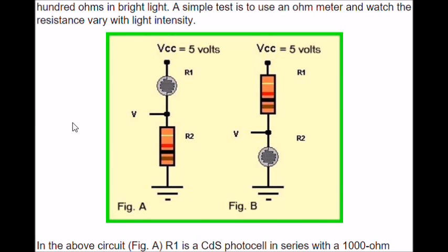Typically, they are connected in a voltage divider circuit. If you look at the circuit in figure A, as the resistance drops due to higher light intensity, the voltage here at V will increase. Vice versa, as the resistance decreases in figure B, the voltage at V will drop.